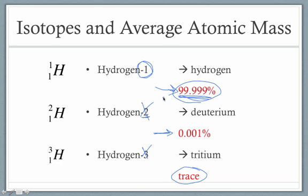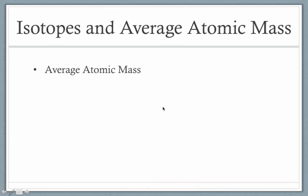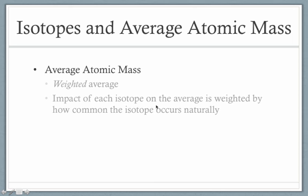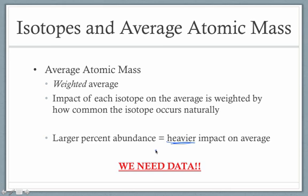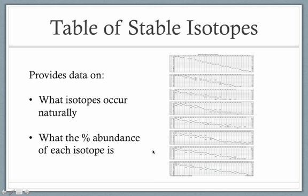Average atomic mass is not a straight average but rather a weighted average — weighted so that the impact of each isotope is affected by how commonly it naturally occurs. The more percent abundant an isotope is, the heavier its impact on the average. We saw this with hydrogen: the average was pulled toward mass 1 because that was the most naturally occurring isotope. This means we're going to need significant data to do these problems, which we look up rather than memorize, so we'll need a data table.